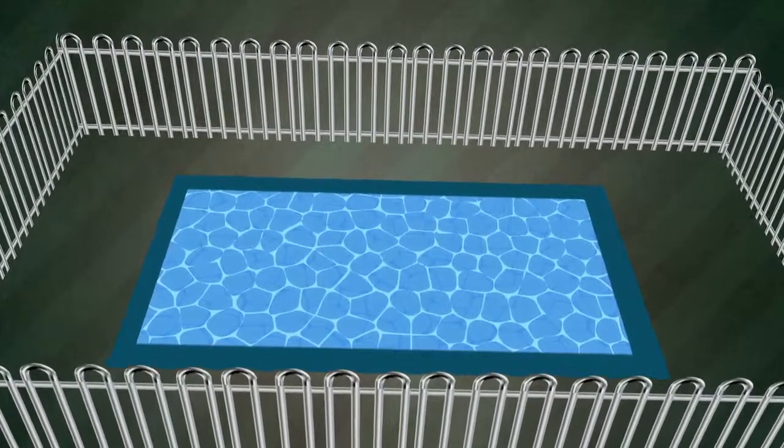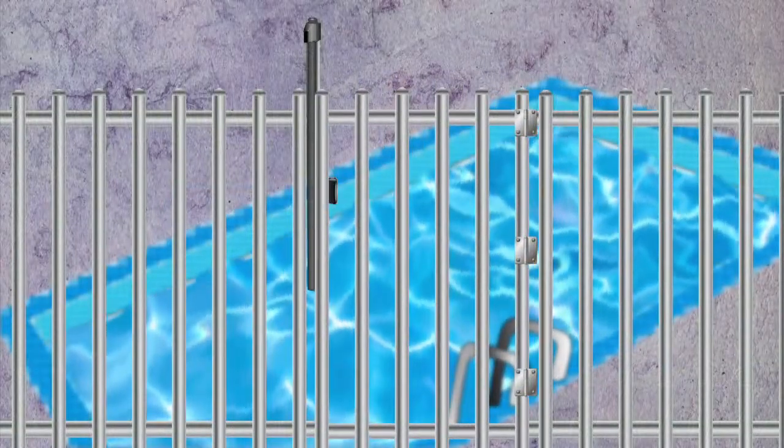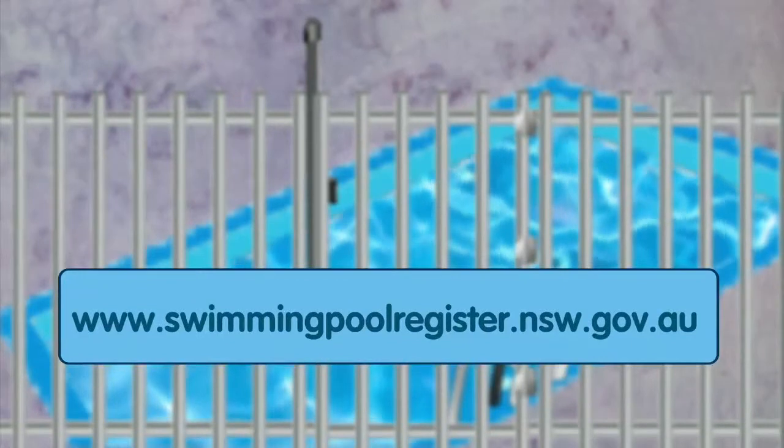Do you have a fully maintained pool fence around your swimming pool? Does it have a self-closing, self-latching gate? Visit www.swimmingpoolregister.nsw.gov.au and go through the Restrict Access Fact Sheet.